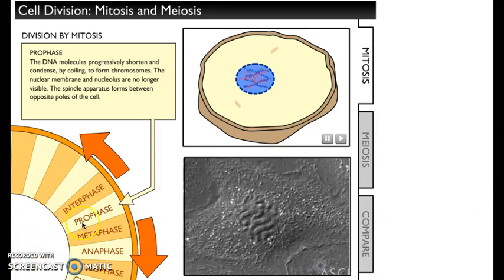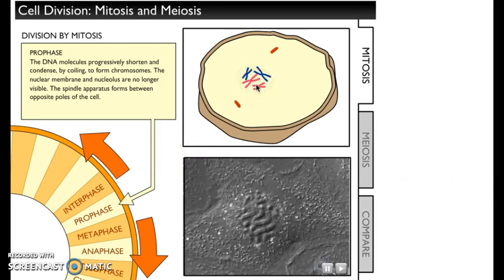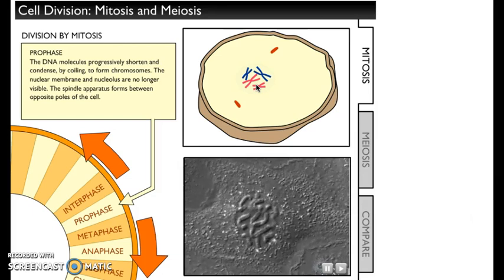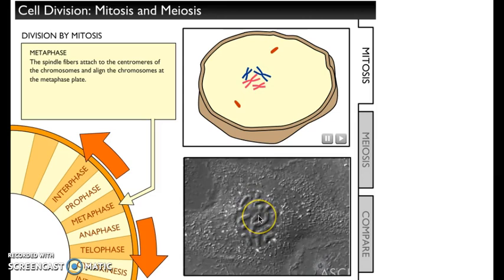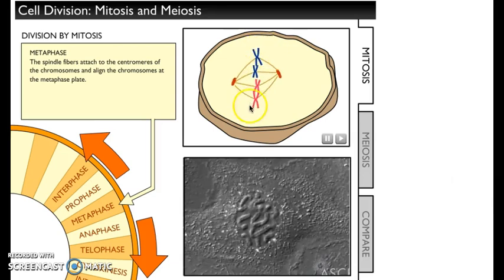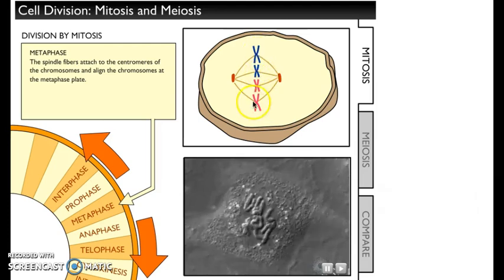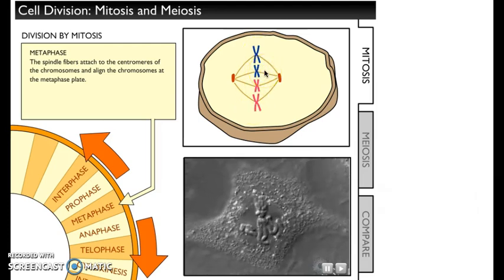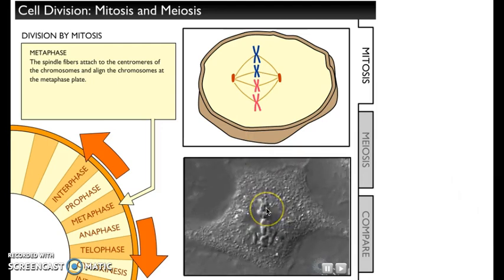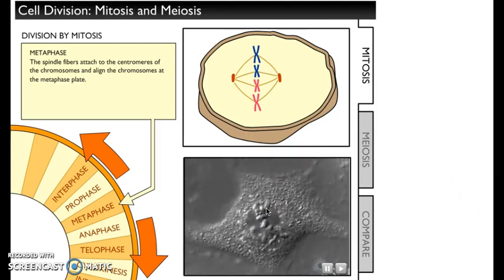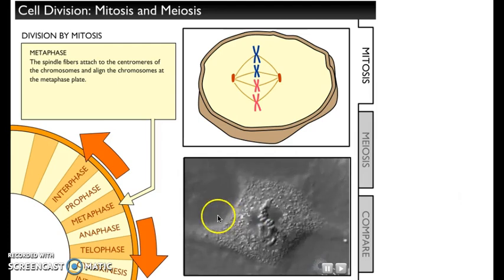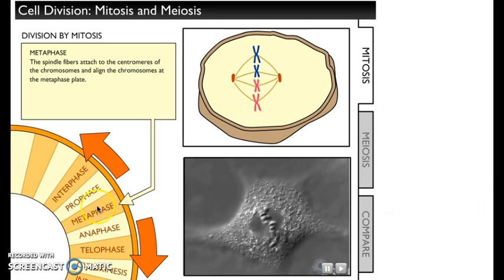Let's watch mitosis happen here. You can see the chromosomes are moving around. Here in the real cell you can see what's going on as well. All the chromosomes line up single file on what's called the equator of the cell — just like the equator of the earth. Down here the same thing is happening. This is called metaphase, or the middle phase.